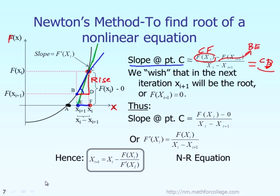Divide by run. This distance we call run is the distance BD. And that BD is actually the same thing as X sub i minus X sub i plus 1, as you can see from the picture. The distance BD, which we call run, is the same thing as X sub i subtract X sub i plus 1.